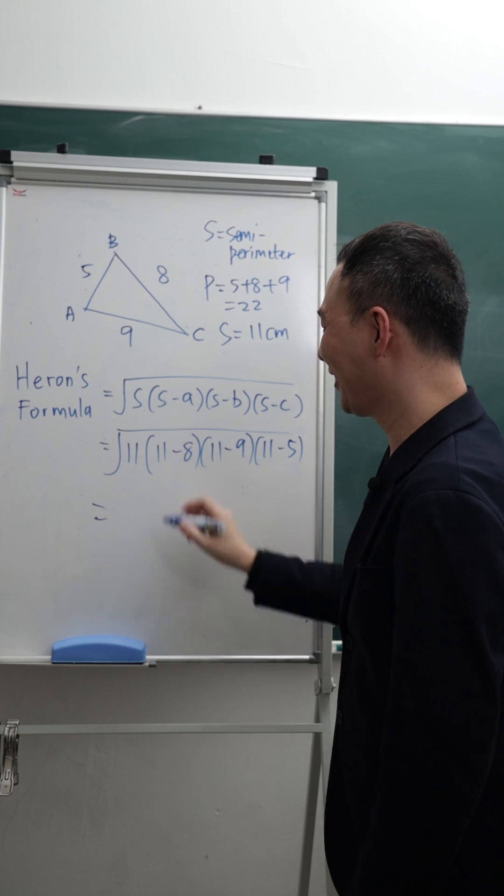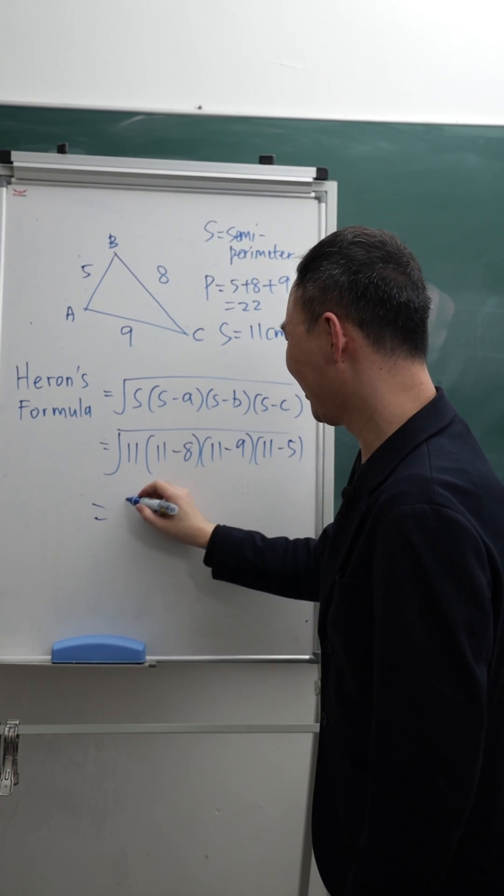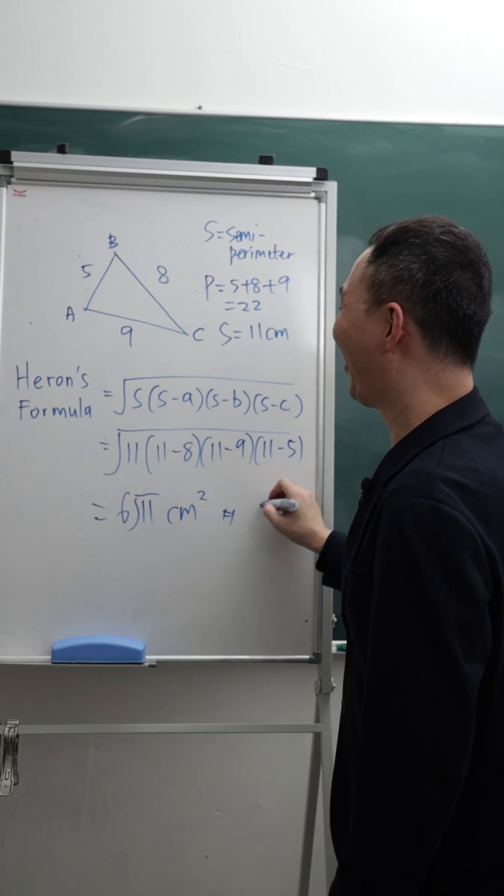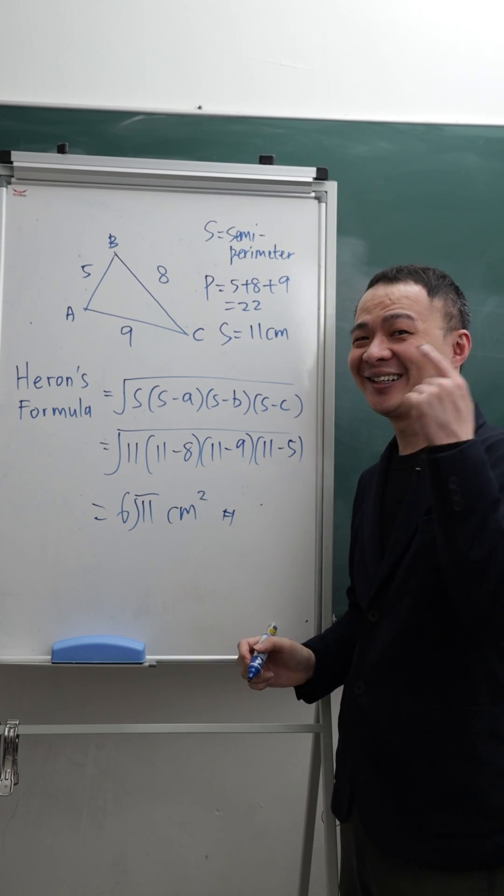And then I can use my calculator to quickly know the answer. I get 6 root 11 centimeter square. See, this is how fast I can find the area for this type of triangle.